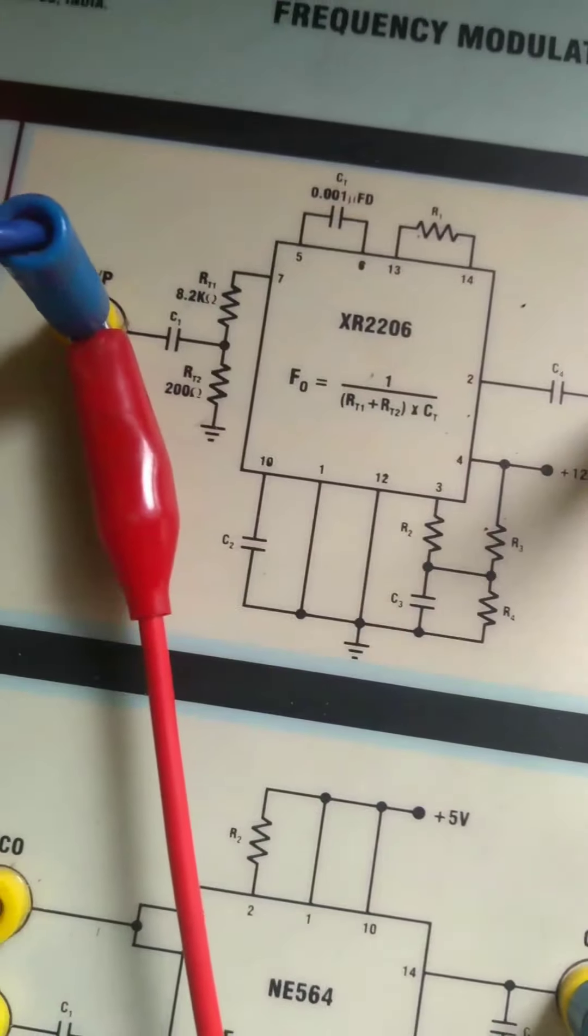The two mix output form FM - frequency modulation. That is the carrier with frequency modulation.